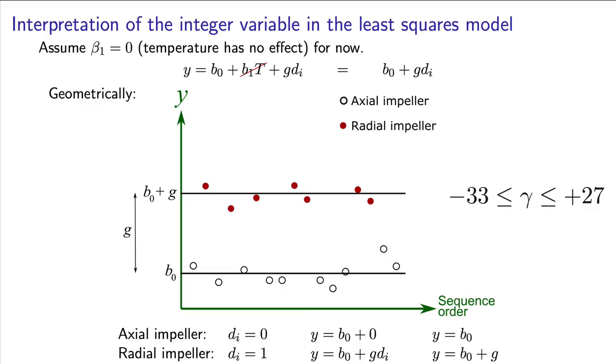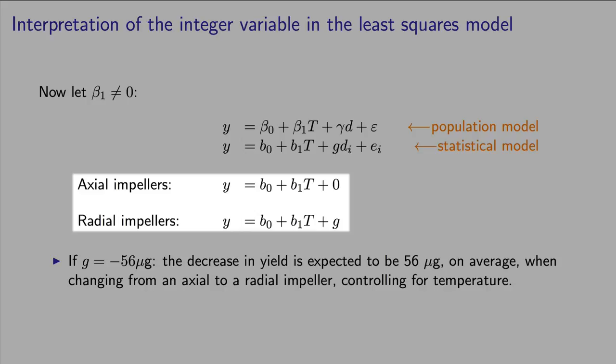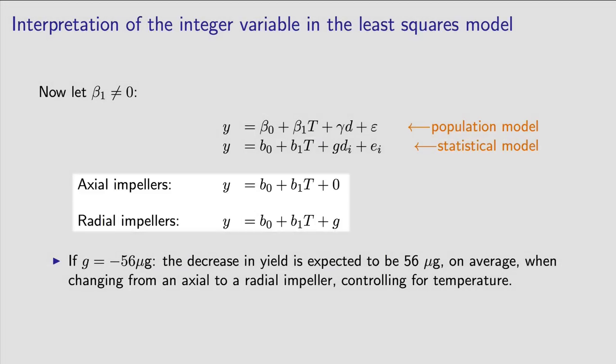Now let's bring the effect of temperature back. Let's assume that the coefficient b1 is non-zero, and then we can go write out this equation twice. Once for axial impellers, with a plus zero term here at the end, and once for radial impellers, with a plus g term at the end. The key thing to notice is that our interpretation of this amount, g, is still the same. It is not modified by the effect of the b1 times t term. For example, if g had a value of minus 56 micrograms, then it indicates that we expect a decrease in the yield of 56 micrograms when we change from an axial to a radial impeller, controlling for temperature.